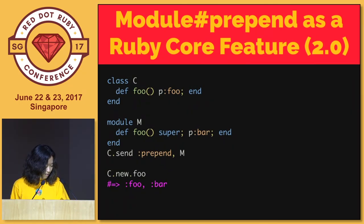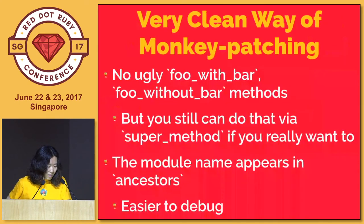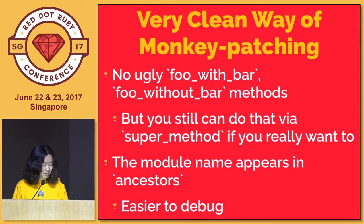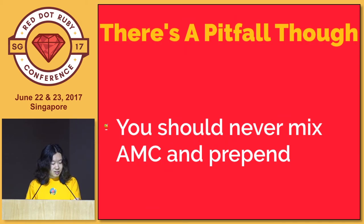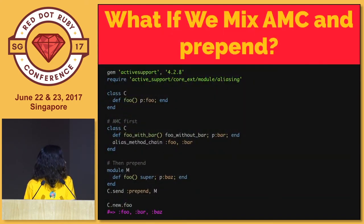So this is the feature - module prepend. It uses a module instead of aliases. It's a very clean way of monkey patching because it's not going to create any ugly methods like with_something or without_something. But still, there's a pitfall when you mix alias_method_chain and prepend. This is an example of mixing: if there's an existing class C and you first extend the method with alias_method_chain and then extend it with prepend, it just works.